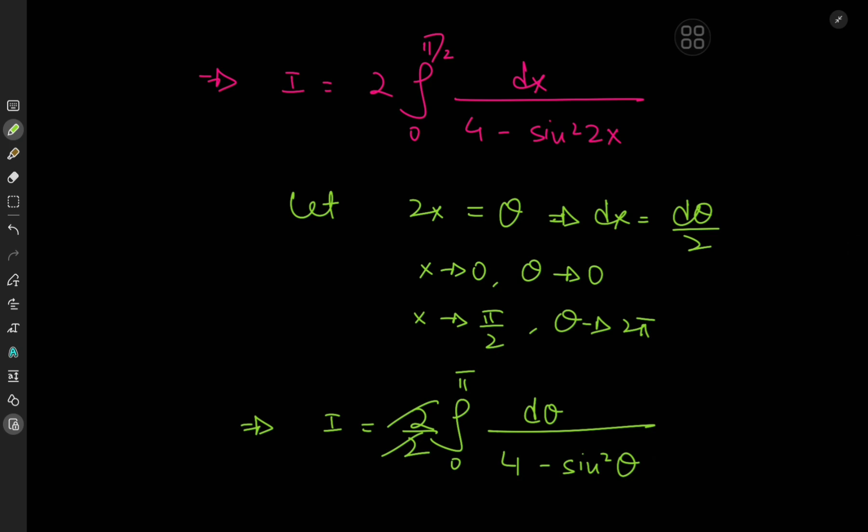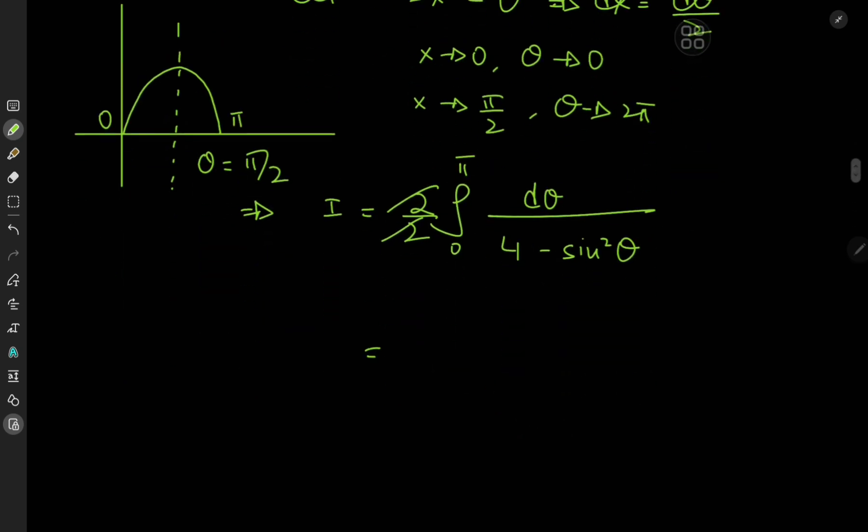The integrand is a function of sine theta, and we're integrating from 0 to pi. There's this really nice symmetry about the line theta equal to pi by 2, which means we don't have to integrate from 0 to pi. We could just integrate from 0 to pi by 2 and double the result. So I here equals twice the integral from 0 to pi by 2 of d theta divided by 4 minus sine square theta.